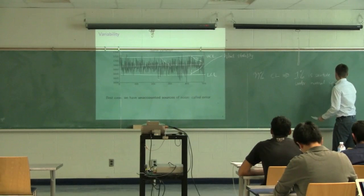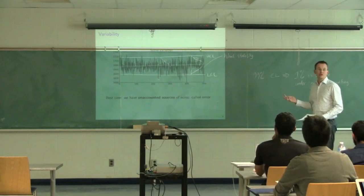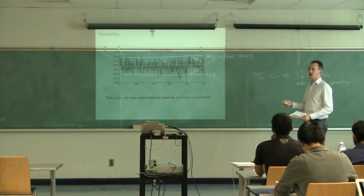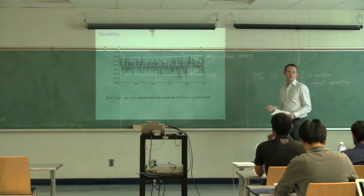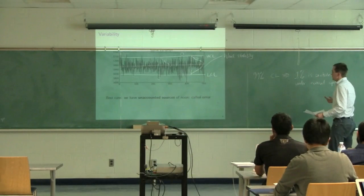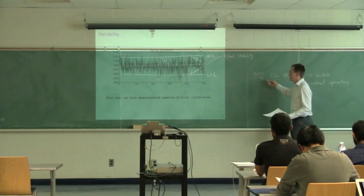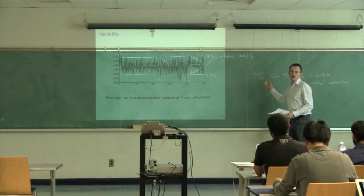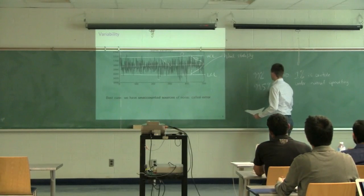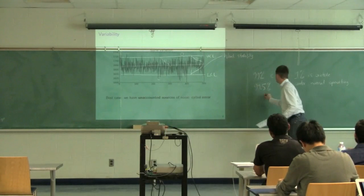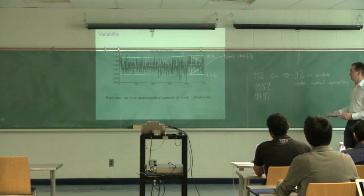So if we're operating normally and producing good products with a 99% control limit, 1 sample out of 100 is going to create a false alarm. We discussed false alarms last class—one point out of 100 will fly above that limit even though that product might be acceptable. That's usually how we set these values: we set a certain false alarm rate. One time out of 100 might be too high, so we might use 99.5% instead, or 99.9%, which means only one point out of a thousand generates a false alarm under normal stable operating conditions.